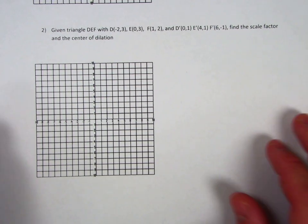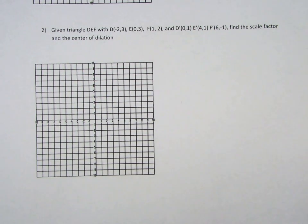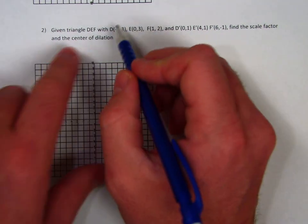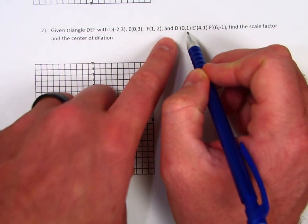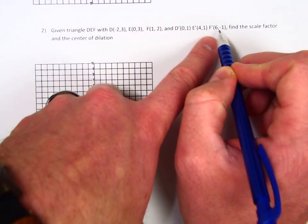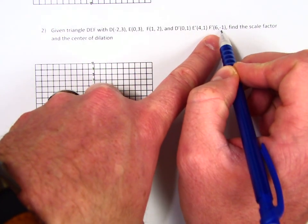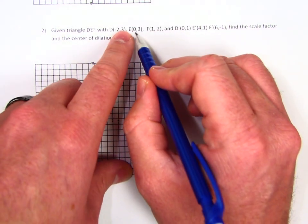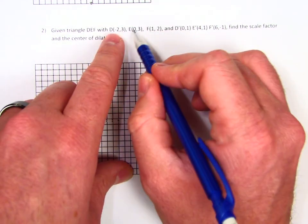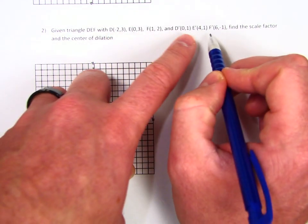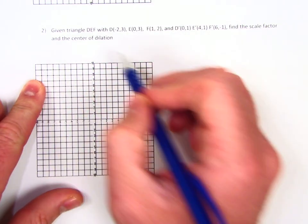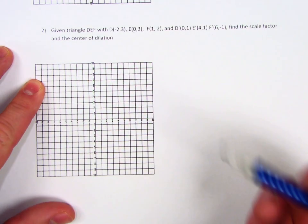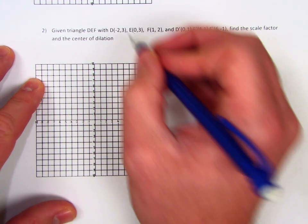Here's our second example, and this one's a little bit tricky. Given triangle DEF and D prime, E prime, F prime, it's giving us the original pre-image and the image. It wants us to find the scale factor and the center of dilation.